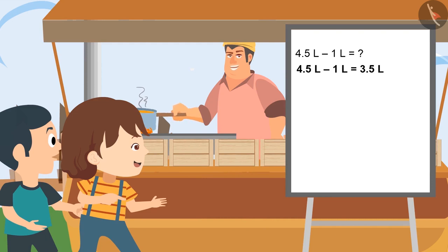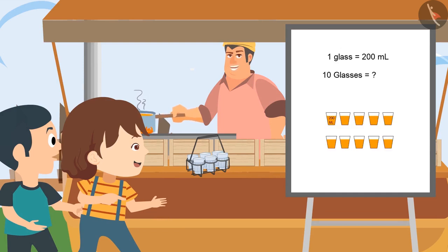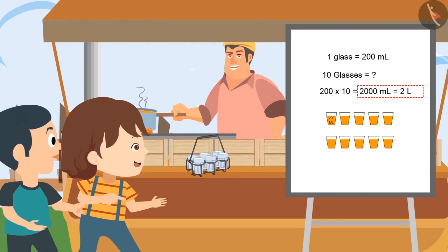Very good, Pinky. Now, could you please bring the cup of tea? Sure, Daddy, here is the cup of tea. If each cup carries 200 millilitres of tea and I have made 10 cups of tea, now can you tell me how much millilitres of tea I have prepared? 2,000 millilitres. 200 multiplied by 10 equals 2 litres.